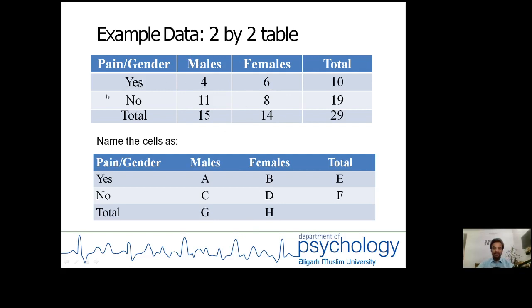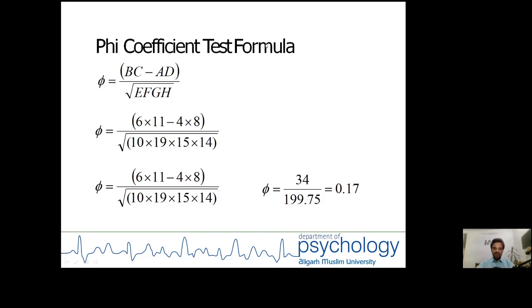Now this table is reproduced in such a fashion. All cells are designated by a, b, c, d, e, f, g, h. The formula for the phi coefficient is (bc - ad) divided by under root (efgh). So these are the cell locations in our table. After putting the values, the value of the phi coefficient is 0.17.